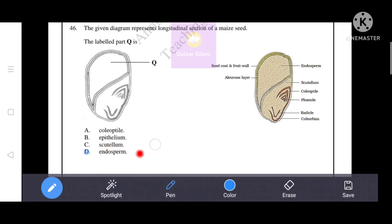The labeled part Q is endosperm. That is endosperm. The labeled part Q is endosperm, means option D is the correct answer.